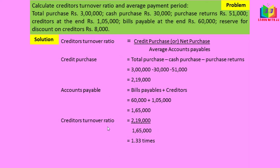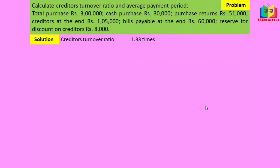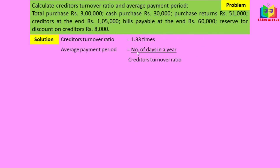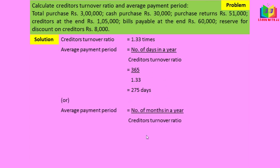Substituting in the formula: 2 lakh 19,000 divided by 1 lakh 65,000 gives 1.33 times — that is the creditor turnover ratio. Using this, average payment period equals 365 divided by 1.33, which gives 275 days, or 9.04 months if calculated in months.